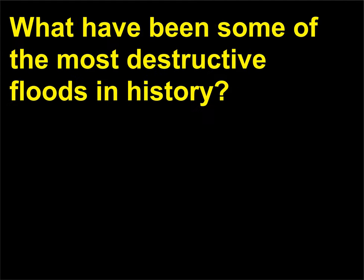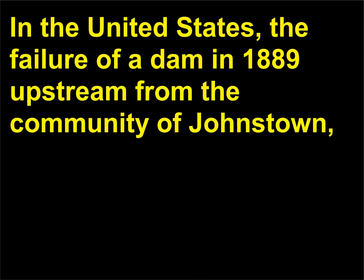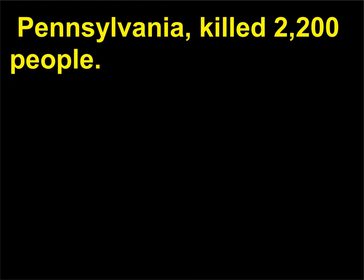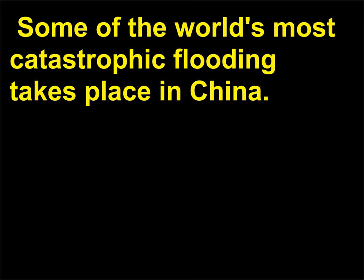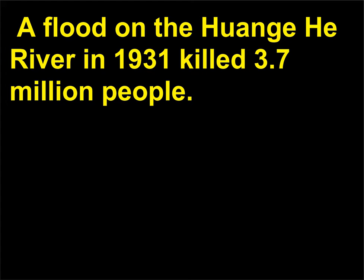What have been some of the most destructive floods in history? In the United States, the failure of a dam in 1889 upstream from the community of Johnstown, Pennsylvania, killed 2,200 people. Some of the world's most catastrophic flooding takes place in China — a flood on the Huai River in 1931 killed 3.7 million people.